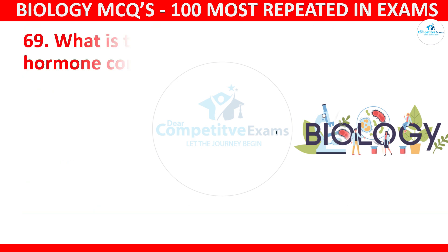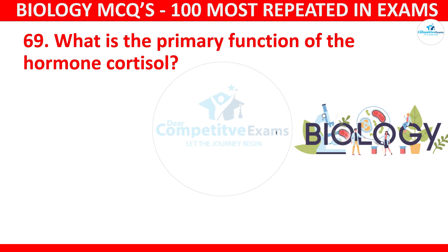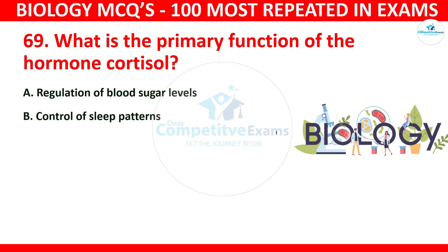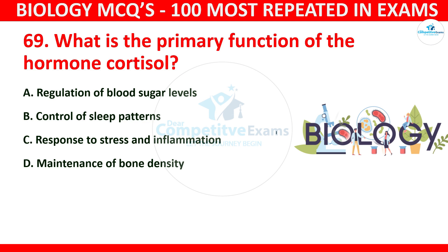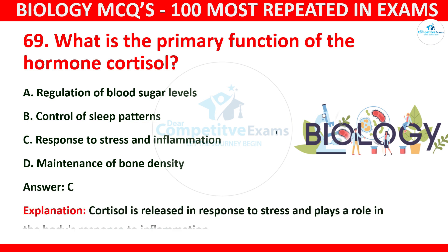Question number 69: What is the primary function of the hormone cortisol? The options are regulation of blood sugar levels, control of sleep patterns, response to stress and inflammation, or maintenance of bone density. The correct answer is C: response to stress and inflammation. Cortisol is released in response to stress and plays a role in the body's response to inflammation.